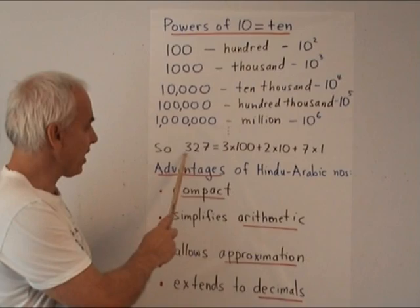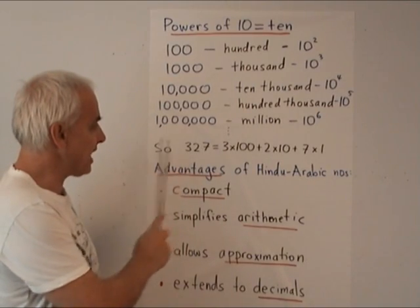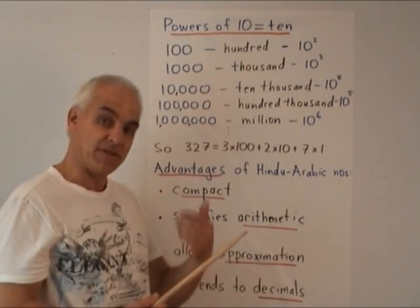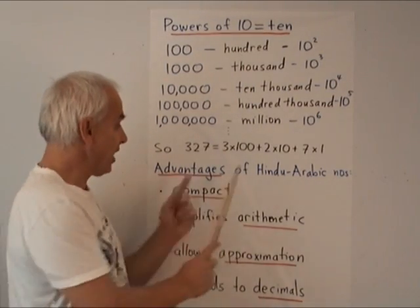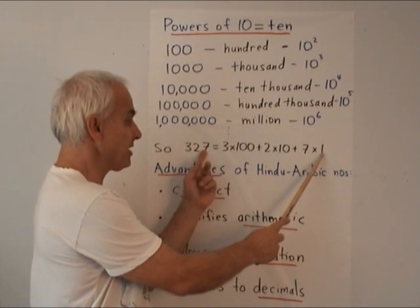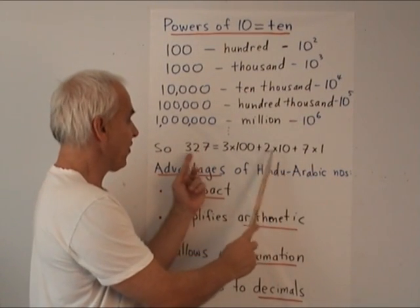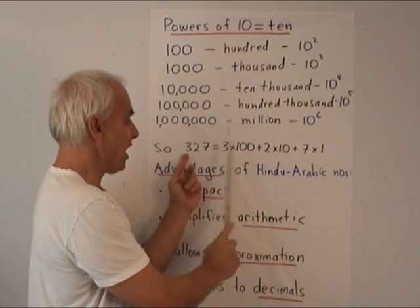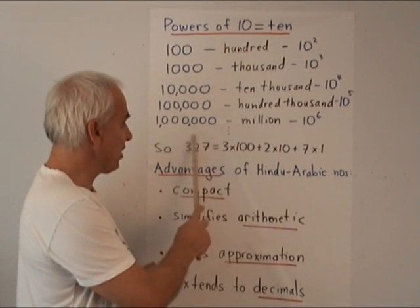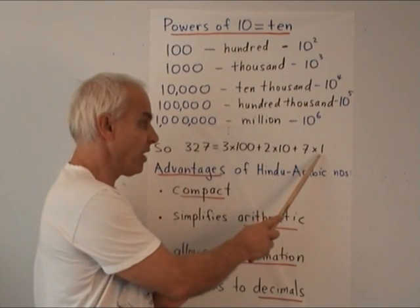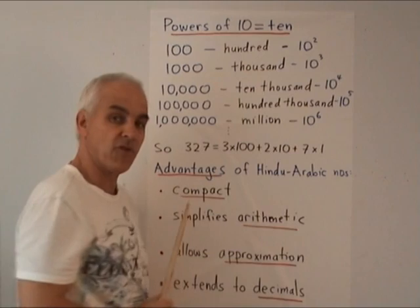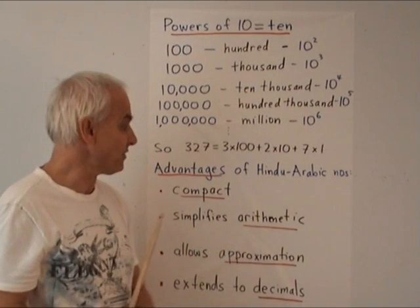So if we have a number like 327, what that really is in terms of tens is: seven ones, two tens, and three hundreds. We can always rewrite a number like this as multiples of powers of ten.